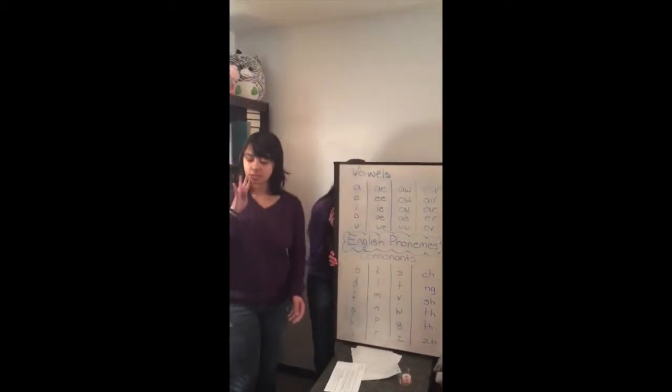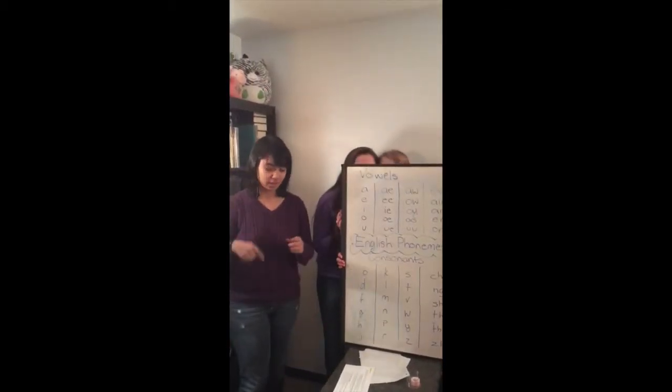Speech occurs in stages. In the one-word stage, a child speaks about one word at a time. In the two-word stage, at around age two, mostly two-word statements are used. Two famous psychologists involved with developmental language are B.F. Skinner and Noam Chomsky. Skinner thought language development could be explained by learning principles such as association, imitation, and reinforcement. Chomsky believed in a universal grammar — that all human languages share the same grammatical building blocks. We start by using nouns.